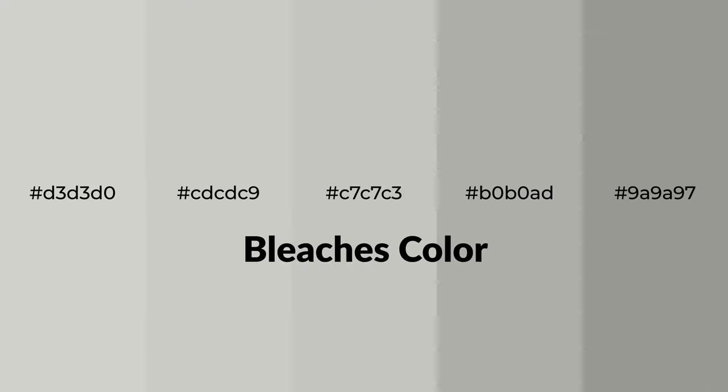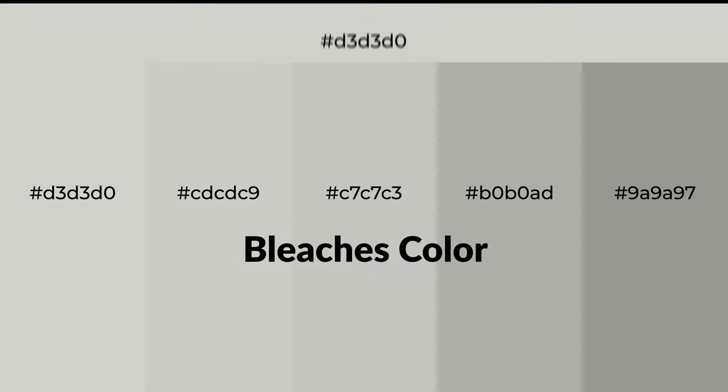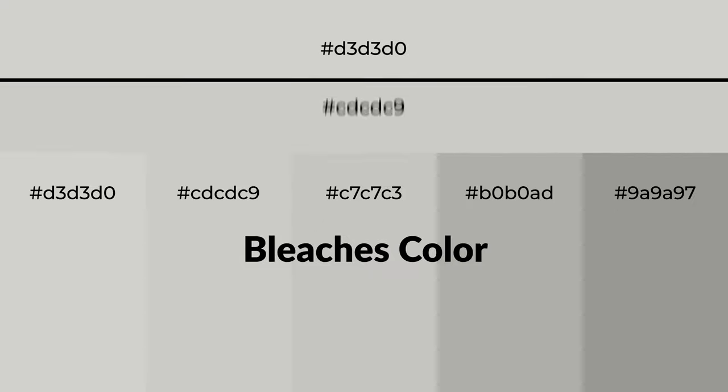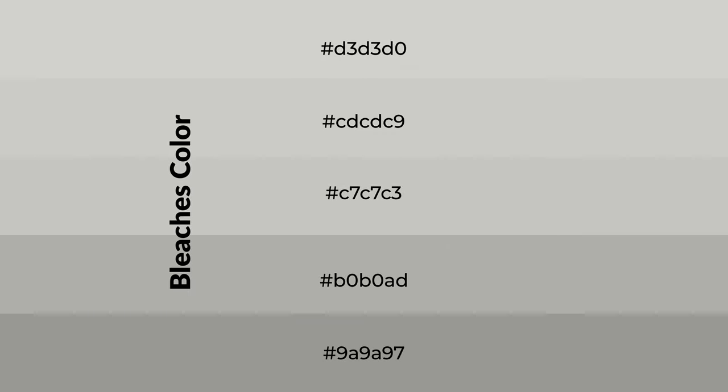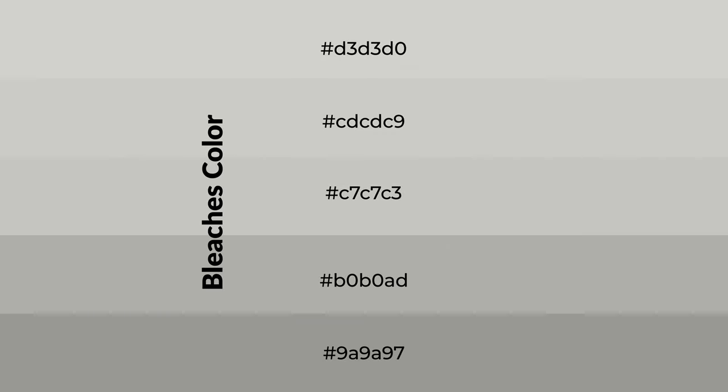Warm shades of bleaches color with gray hue for your next project. To generate tints of a color, we add white to the color. Tints create light and exquisite emotions. To generate shades of a color, we add black to the color.